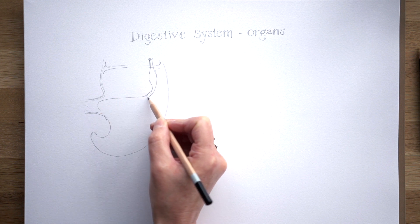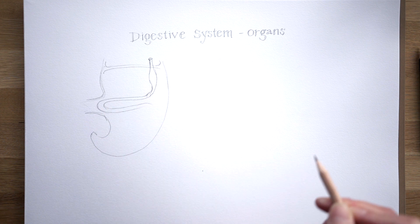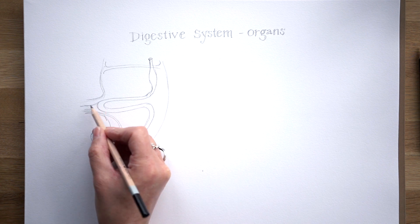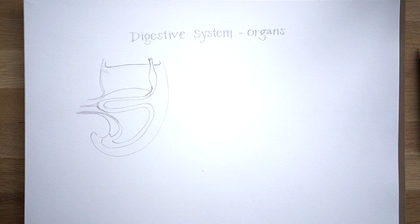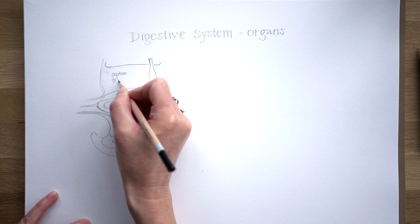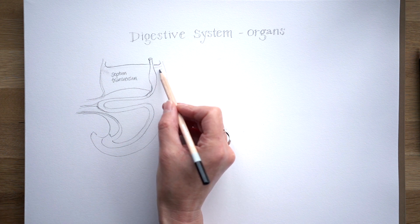I'm just drawing the bottom half of a developing embryo here. You can see where the foregut is bulging to form the stomach, and you've got the primary intestinal loop of the midgut as well, which starts to form in the fifth week of development. Just in front of the stomach, you've got septum transversum, the major contributor to the diaphragm, but it also continues as a sheet of tissue below that, stretching from the stomach to the anterior abdominal wall.